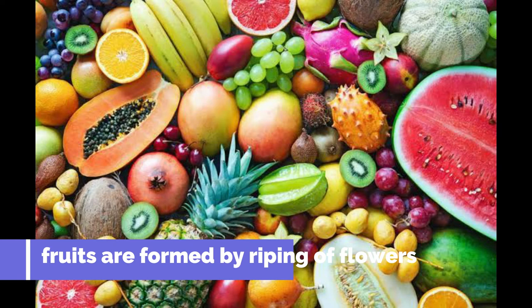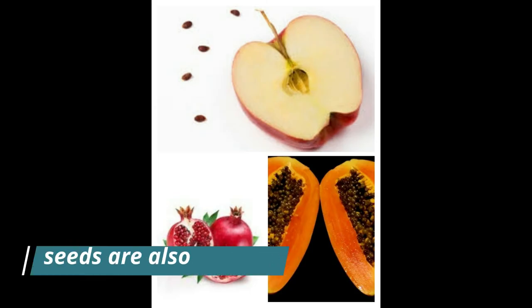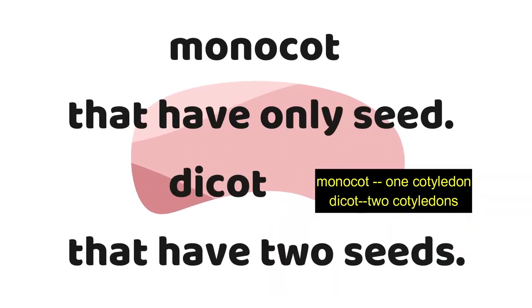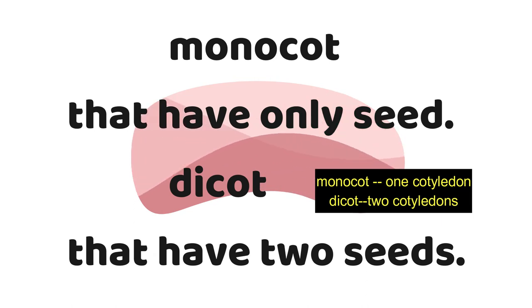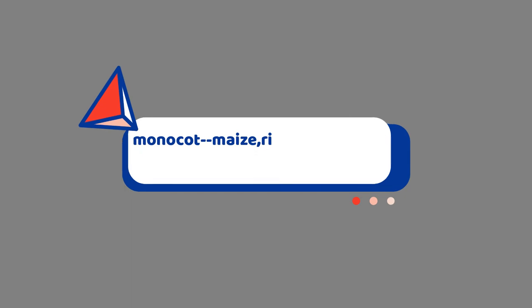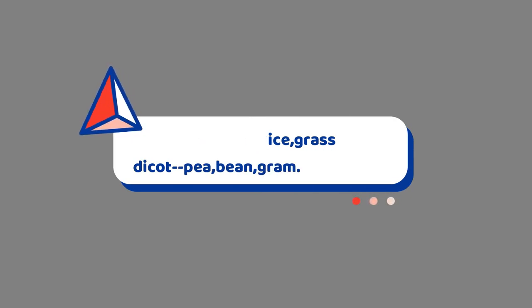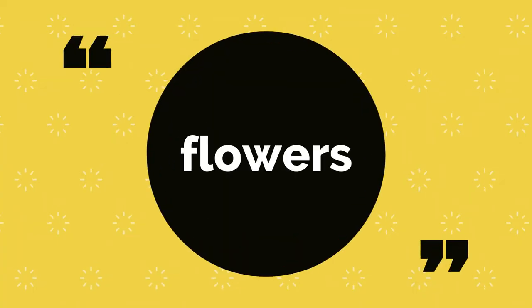Fruits are formed by the ripening of flowers. Seeds are also found in some fruits, such as apples, papaya, and even banana has small seeds. There are two types of seeds: monocot and dicot. Monocot have only one seed leaf and dicot have two. Monocot seed examples are maize, rice, and grass. Dicot seed examples are pea, bean, and gram.